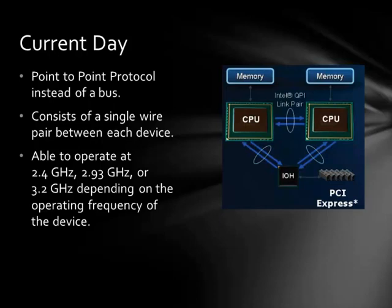Like most technologies, each QPI architecture is not the same. The spec is designed to run at three different frequencies: 2.4 GHz, 2.93 GHz, or 3.2 GHz. The frequency the link runs at depends on the device itself. For example, the Intel Core i7-980X Extreme Edition is able to run at 3.2 GHz due to its increased clock speed, whereas some Xeon processors are only able to run at the slower 2.4 GHz frequency due to their lower clock speed.